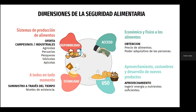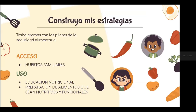De ahí surge la necesidad de que dentro de nuestra estrategia de intervención utilicemos solo el acceso y el uso de los alimentos. El acceso por medio de huertos familiares y el uso por medio de la educación nutricional, la preparación de alimentos nutritivos y funcionales. Dejamos a un lado la inocuidad alimentaria por ahora, ya que eso conlleva buenas prácticas de manejo, algo en lo que apenas nos estamos fortaleciendo.